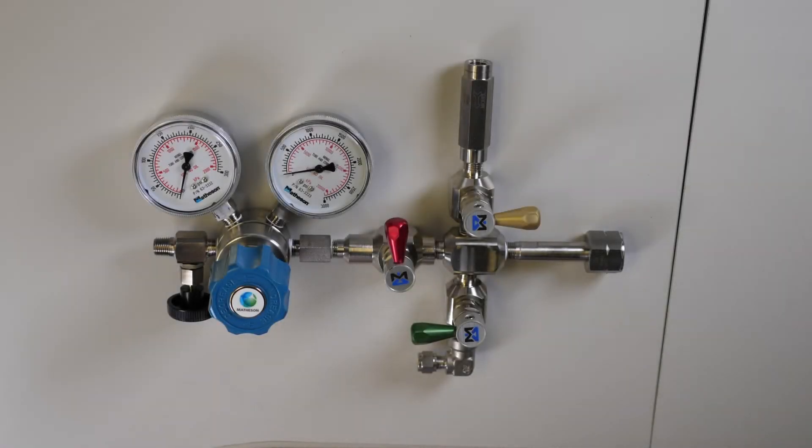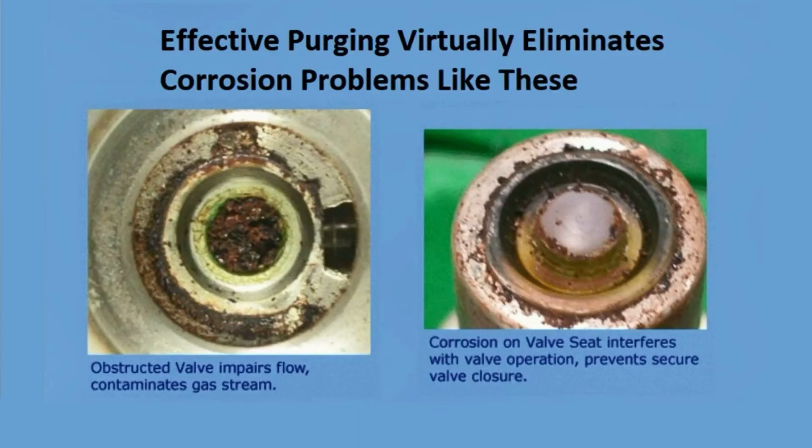The 3210B series can be configured with a cross purge. A cross purge is an effective way of removing atmospheric moisture and oxygen from your process gas stream and will help extend the life of your corrosive service regulator.